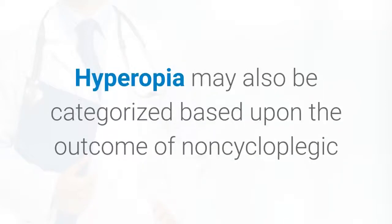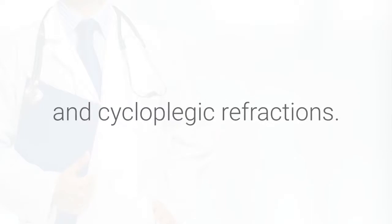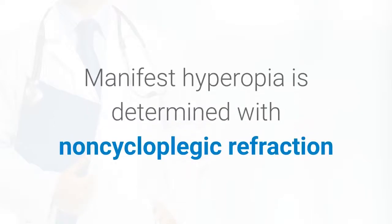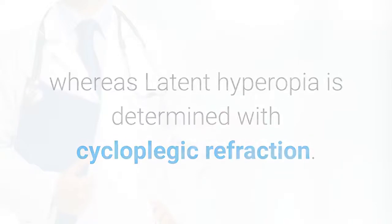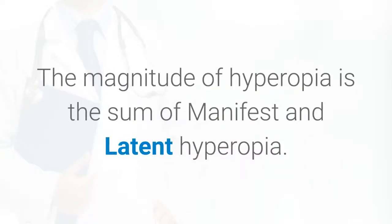Hyperopia may also be categorized based upon the outcome of non-cycloplegic and cycloplegic refractions. Manifest hyperopia is determined with non-cycloplegic refraction whereas latent hyperopia is determined with cycloplegic refraction. The magnitude of hyperopia is the sum of manifest and latent hyperopia.